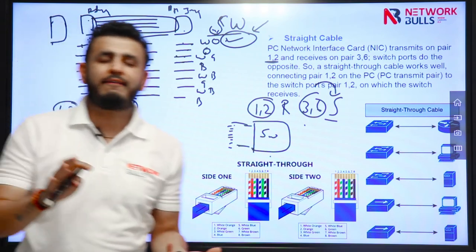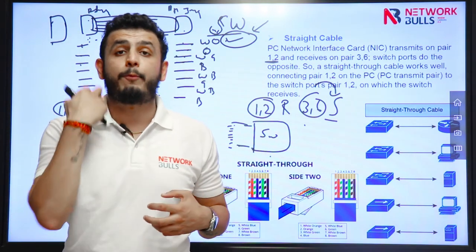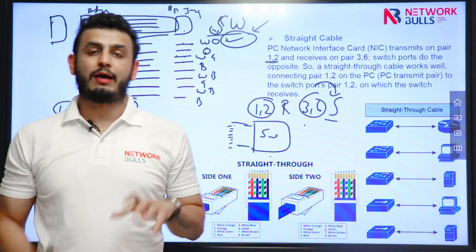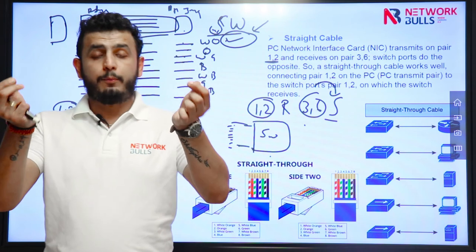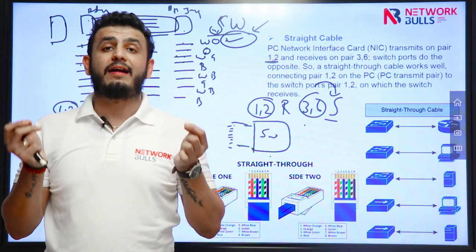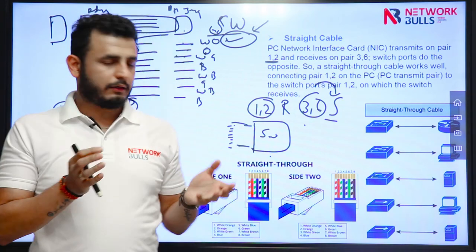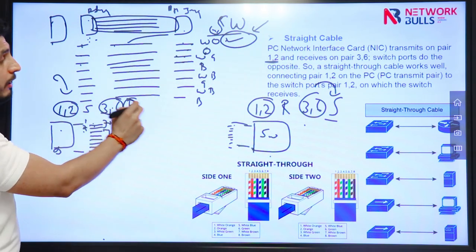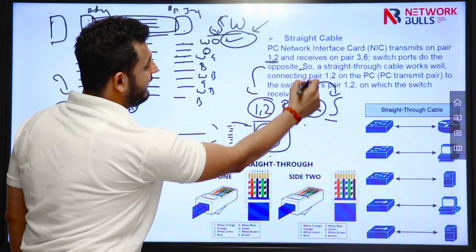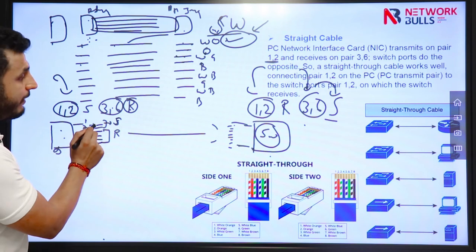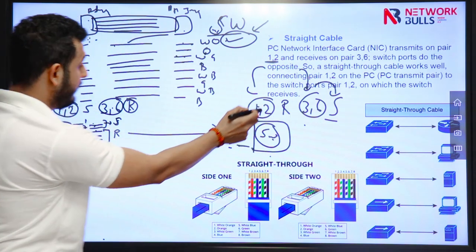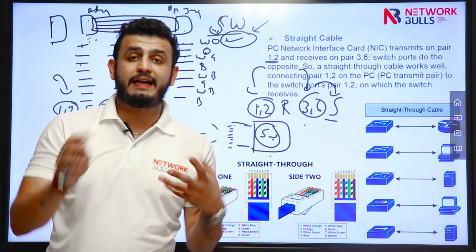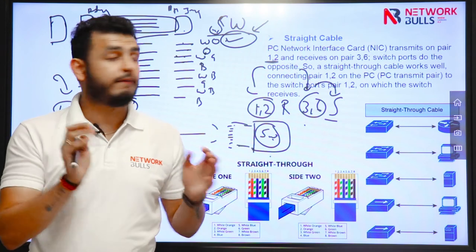Whenever we connect two devices that use opposite pins for sending and receiving, we use a straight cable. A straight cable means on both ends we are using the same pin assignments. In our case, the computer uses pins 1 and 2 for sending and 3 and 6 for receiving, while the switch uses pins 1 and 2 for receiving and 3 and 6 for sending — so their sending and receiving pins are opposite, meaning we use a straight cable.